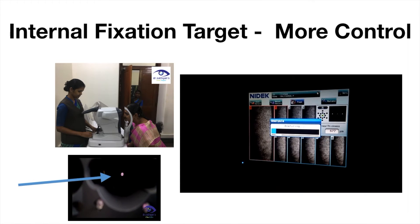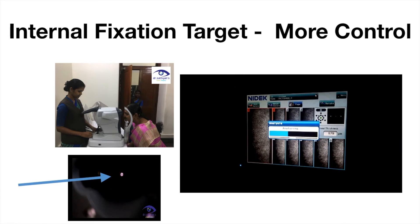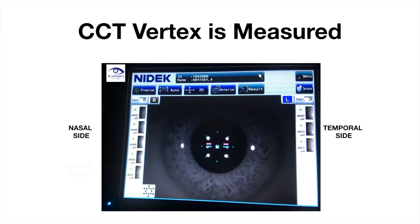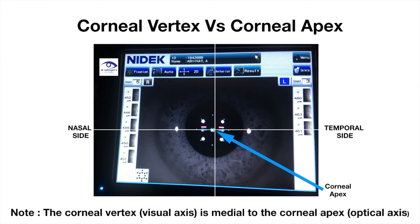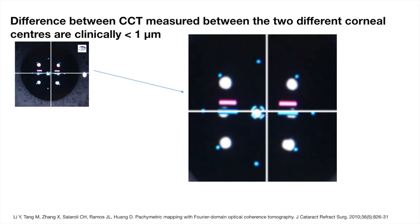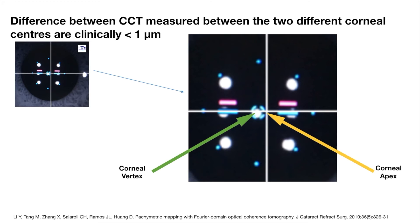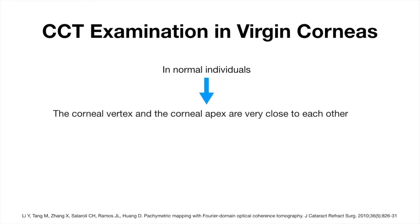This is an example of fixation target usage in specular microscopy to measure CCT. The corneal apex is slightly temporal to the vertex, as depicted here. However, the CCT difference between the two centers is less than 1 micrometre. In normal virgin corneas, they are both very close to each other and more or less the same.